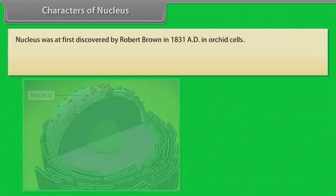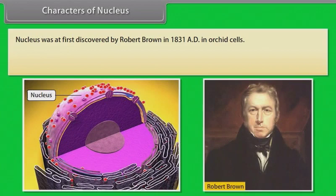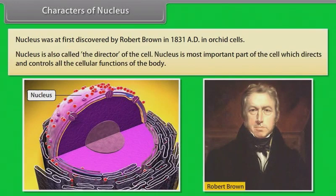Characters of nucleus: Nucleus was first discovered by Robert Brown in 1831 AD in orchid cells. Nucleus is also called the director of the cell. Nucleus is the most important part of the cell, which directs and controls all the cellular functions of the body.